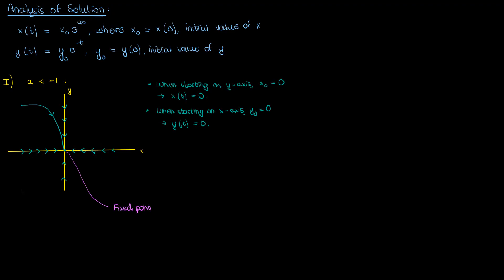The same principle applies if I start anywhere else. If I start here, for instance, my trajectory is going to be pulled more strongly towards x equals zero than towards y equals zero, just like before, because the exponential on x(t) decreases faster than the exponential on y(t). So once the trajectory gets rapidly close to x equals zero it's going to slowly start heading towards y equals zero and will eventually reach the origin.